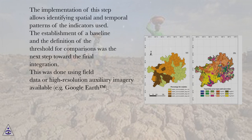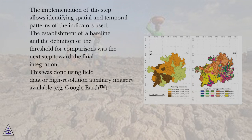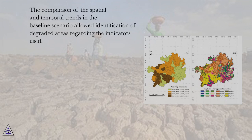The establishment of a baseline and the definition of the threshold for comparisons was the next step toward the final integration. This was done using field data or high-resolution auxiliary imagery available, for example Google Earth. The comparison of the spatial and temporal trends in the baseline scenario allowed identification of degraded areas regarding the indicators used.